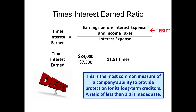The TIE ratio takes what we call EBIT, which is your earnings before interest and taxes have been deducted, and divides that by interest expense. All things being equal, do you want your TIE ratio to be high or low? A high ratio would mean high earnings and low interest expense. A low TIE ratio would mean low earnings and high interest expense.